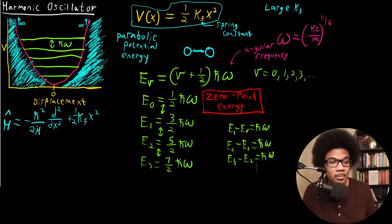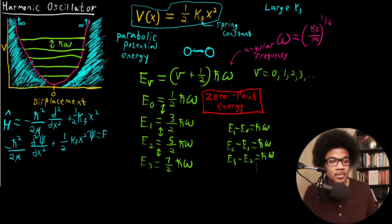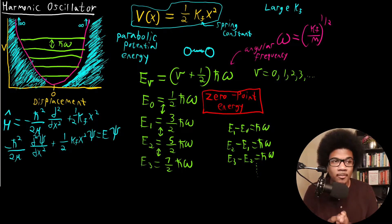So obviously if we wanted to plug this into a Schrödinger equation, then we would have -ℏ²/(2μ) d²ψ/dx² plus 1/2 K_f x² ψ equals E ψ. So that would be our Schrödinger equation for the one-dimensional quantum harmonic oscillator.